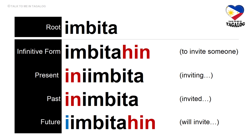Root word: imbita. Infinitive form: imbitahin — meaning to invite someone. Present tense: iniimbita — inviting. Past tense: inimbita — invited. Future tense: iimbitahin — will invite someone.